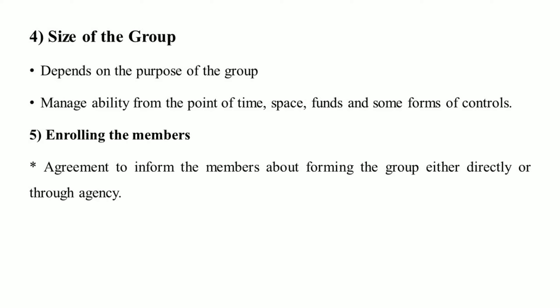The fourth step of stage one is the size of the group. Size depends on the purpose of the group and manageability from the point of time, space, funds, and some form of control. The fifth step is enrolling the members — informing members about forming the group either directly or through the agency.